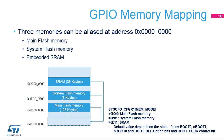The MEM_MODE field in the SYSCFG CFGR1 register selects which memory is accessible at address 0. Three memories can be aliased to address 0: main flash memory, system flash memory, or SRAM. Note that the default setting of this field depends on the boot pin, option bytes, and control bit.